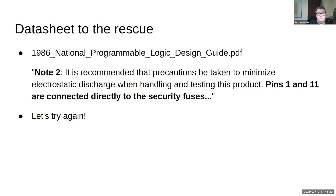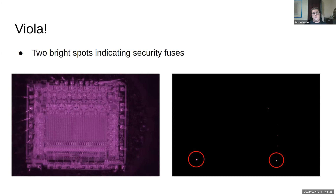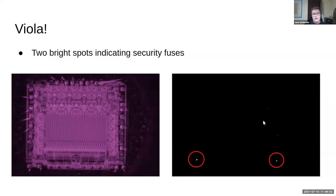So let's try taking a picture again of the security fuses burning, but zoomed out so we can see the entire chip. And lo and behold — on the left is the infrared microscope in test mode, and on the right with the security fuses blowing, you can see two very bright areas. Those are the security fuses. The theory is sound — I just wasn't looking at the right part of the chip. There are a few other lit-up areas from bias voltages and analog parts, but we only care about the two strong signals at the bottom.